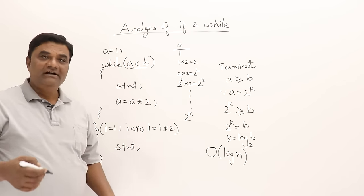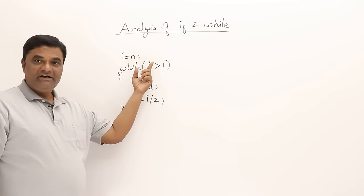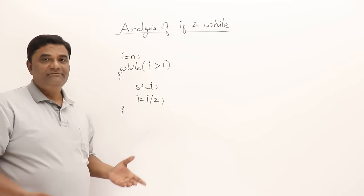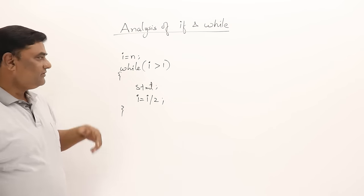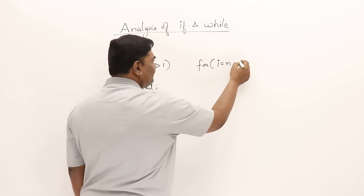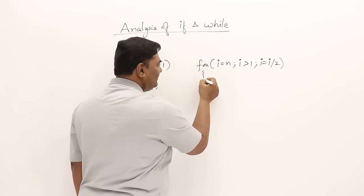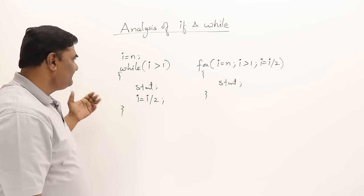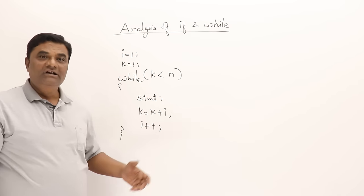Let's take one more example: a while loop where i starts from n and i is divided by 2 every time. Again the time will be O(log n), as established in the previous video. The equivalent for loop is: 'for i=n; i>1; i=i/2; some statement inside'. This is the same analysis — for loop or while loop, the time is O(log n).